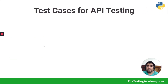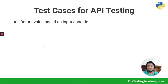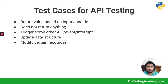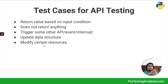Test cases for API testing include: checking return values based on input conditions, cases where nothing is returned, triggering another API, updating a structure using PATCH, modifying a structure, creating a new resource. We check everything in these test cases — we'll see this practically, so don't worry. Thank you for watching, see you in the next video.